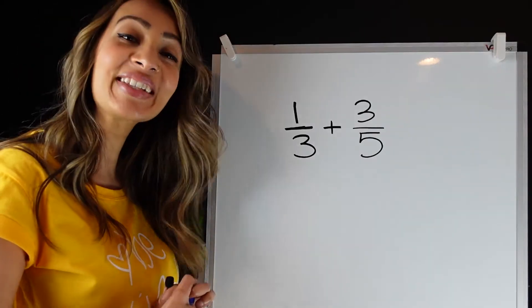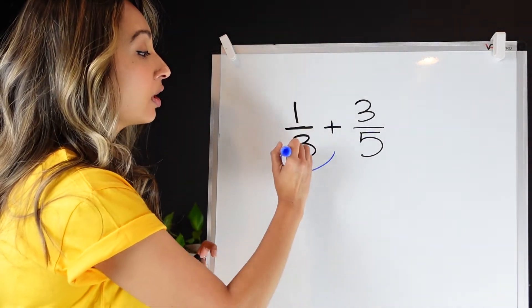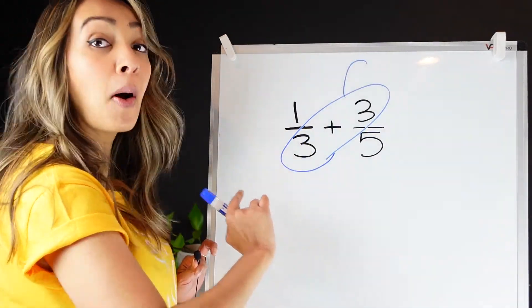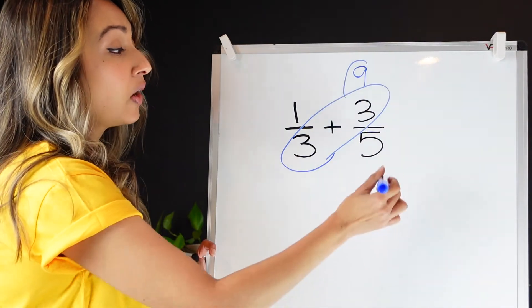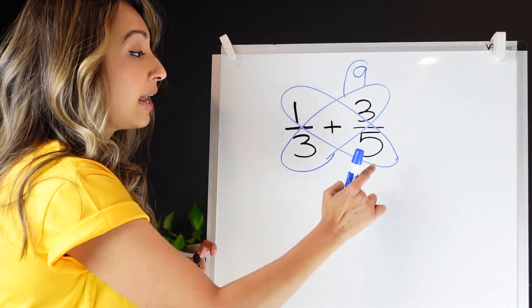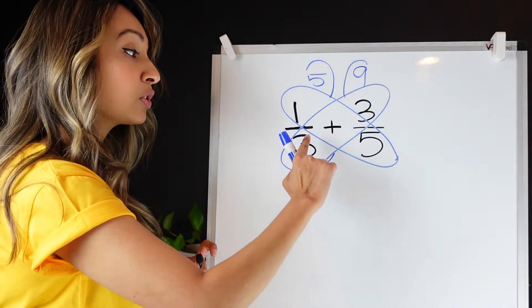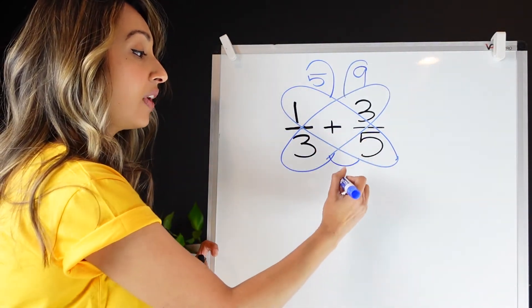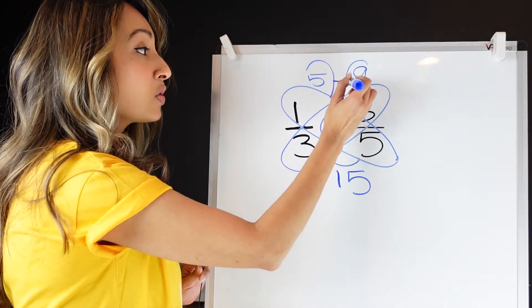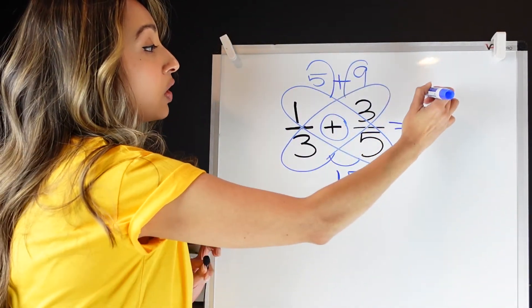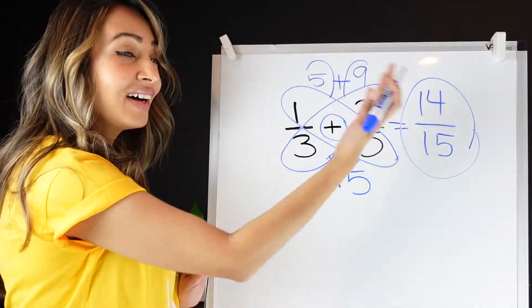No butterflies were harmed in the making of this video! For the Butterfly Method, first you draw a diagonal wing and multiply across — don't add, you multiply across. I know 3 times 3 is 9. Then I make my second wing and multiply across again: 5 times 1 is 5. The last part is you multiply the bottom: 3 times 5 is 15. Now I check back — I'm adding, so I add 9 plus 5, which is 14, and keep my denominator the same. Ta-da! A beautiful butterfly.